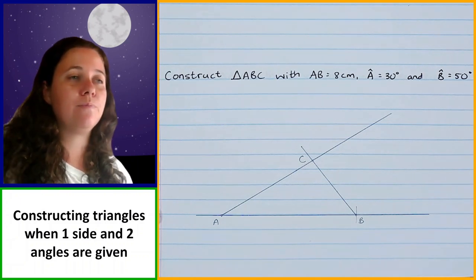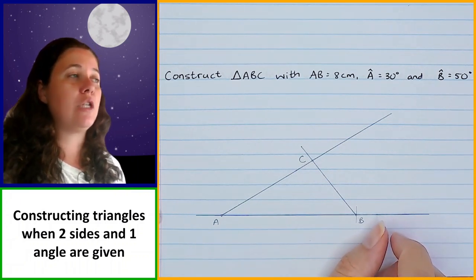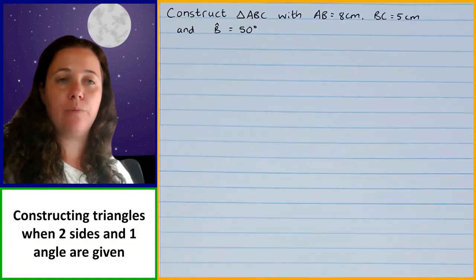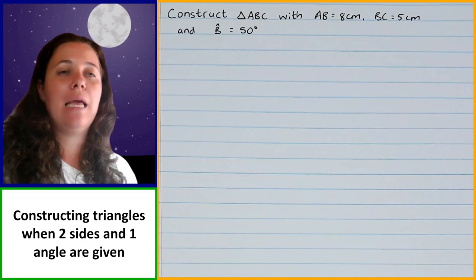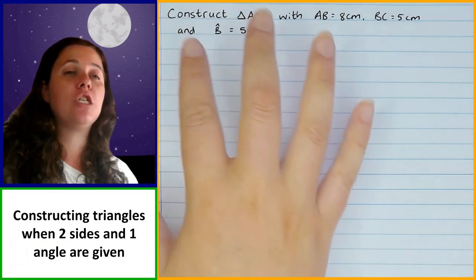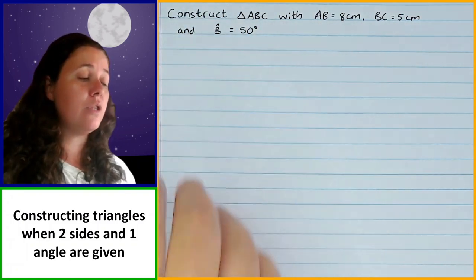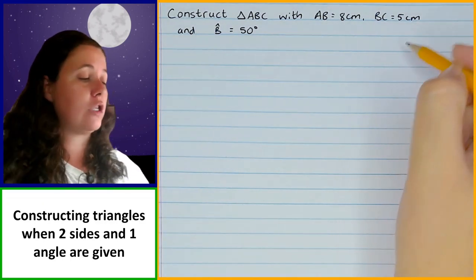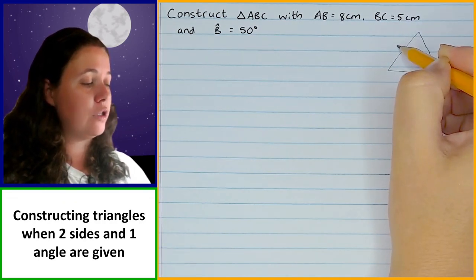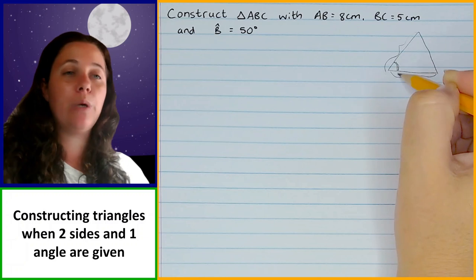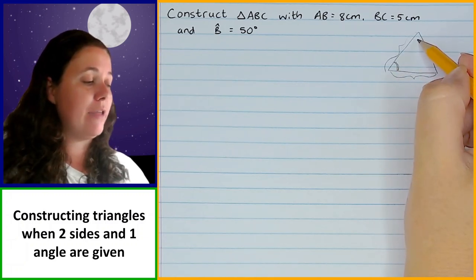The next one we're going to do is constructing triangles where two sides and one angle have been given. In this example, we construct triangle ABC where AB is 8 centimeters, BC is 5 centimeters, and angle B is 50 degrees. When you are given two sides and an angle, it has to be the included angle — the angle that is between the two sides you've been given. So if I've been told this side and that side, I have to be told the angle that is between those two sides; I can't use one of the other angles.